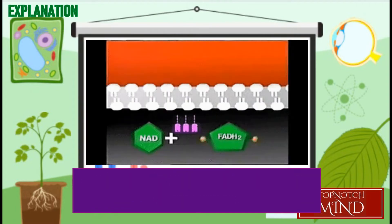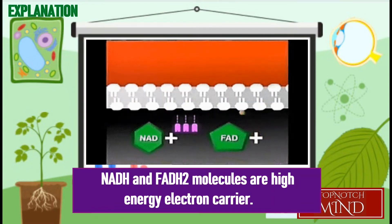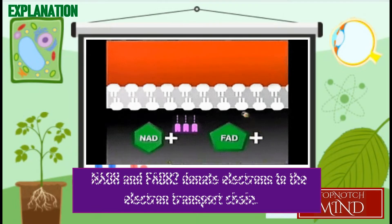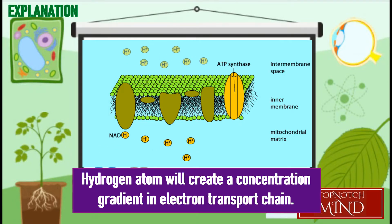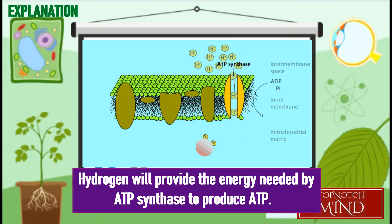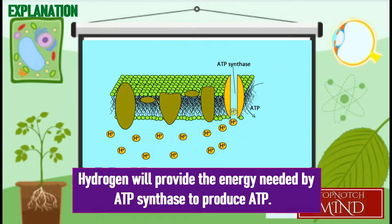Meanwhile, NADH and FADH2 molecules are high-energy electron carriers generated in glycolysis and Krebs cycle. These molecules donate electrons to the electron transport chain, which are then used to pump protons into the intermembrane space of the mitochondrion. On the other hand, hydrogen atoms will create a concentration gradient in the electron transport chain. The movement of hydrogens back into the matrix will provide the energy needed by ATP synthase to produce ATP.